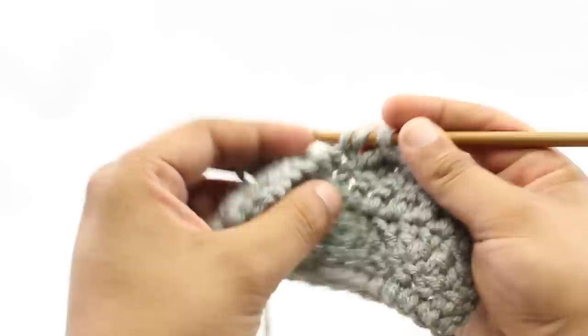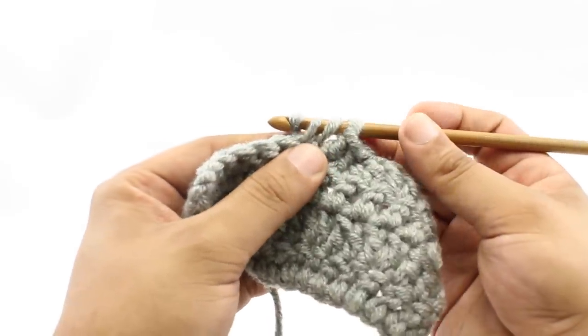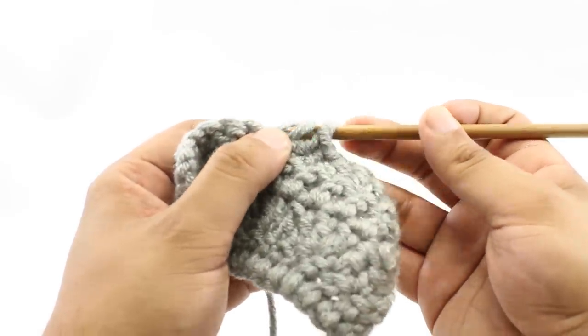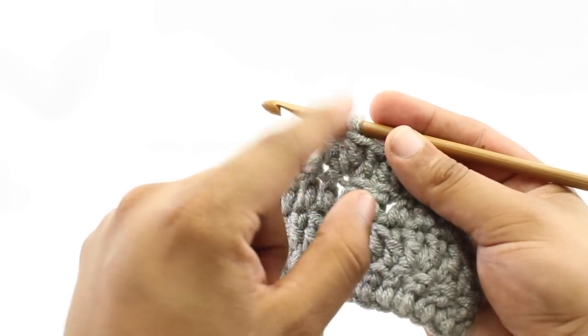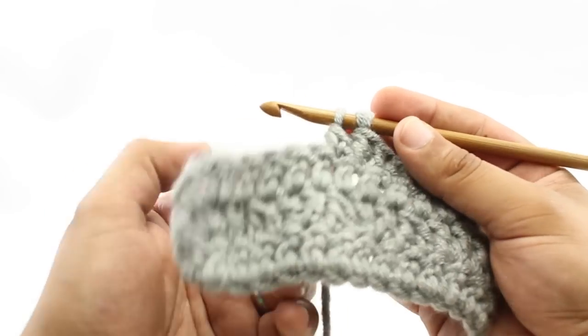For step five, we're going to yarn over once more. And step six, we will draw through the next two loops on our hook. That's going to leave two loops left on our hook. We're not going to work these just yet.